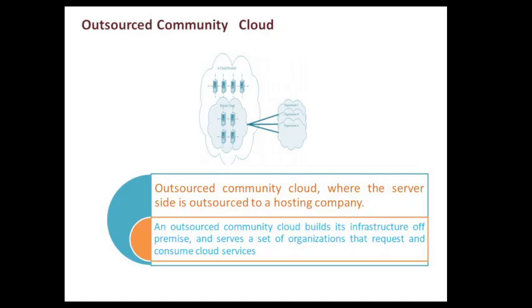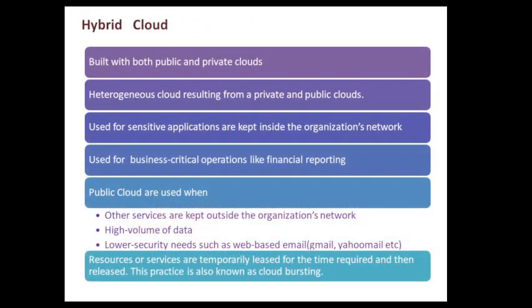Outsource community cloud builds its infrastructure off-premise and serves a set of organizations that consume cloud services. Then we have the hybrid cloud, built with both public and private cloud — a heterogeneous cloud resulting from private and public cloud. It is used for sensitive applications and business-critical operations like financial reporting. Public clouds are used when other services are kept outside the organization network. High volume of data is involved with low security needs, such as web-based email. Resources or services are temporarily released for the time required and then released — this practice is also known as cloud bursting.